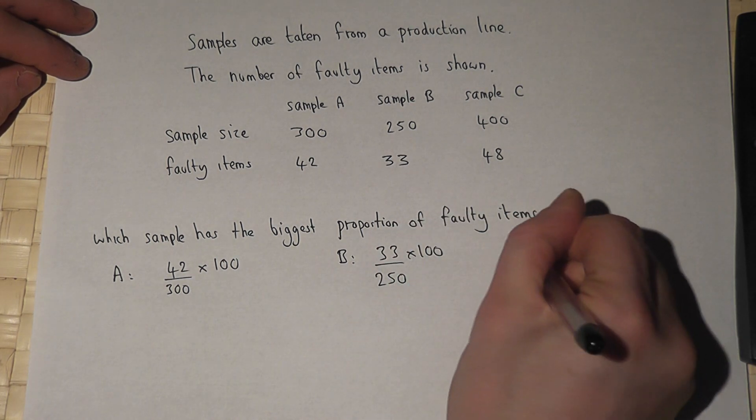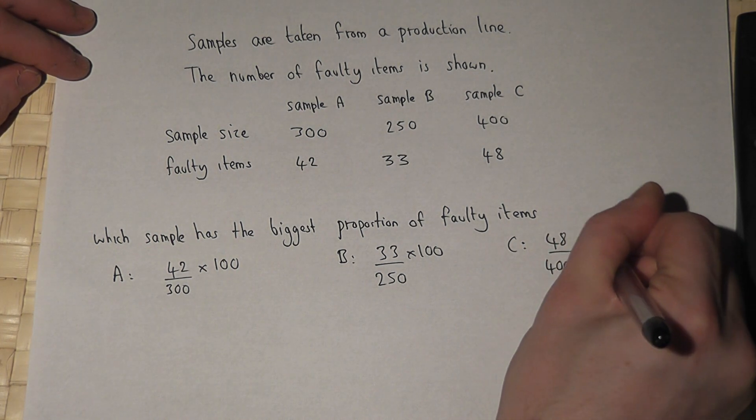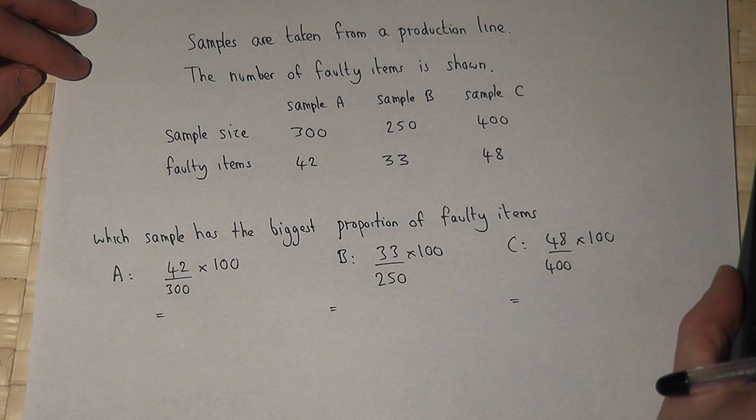In sample C, it's 48 out of 400, times 100. Now I'll work out what each of these percentages is.